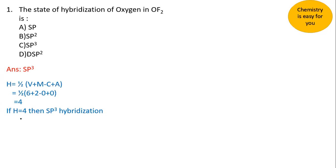We use the equation H = ½(v + m - c + a), where v is the valence of the central metal atom, m is the number of monovalent atoms, c is the charge of the cation, and a is the charge of the anion. In this case, the central atom is oxygen and the monovalent atom is fluorine. So: ½(6 + 2), where 6 is the valence of oxygen and 2 is the number of fluorine atoms.